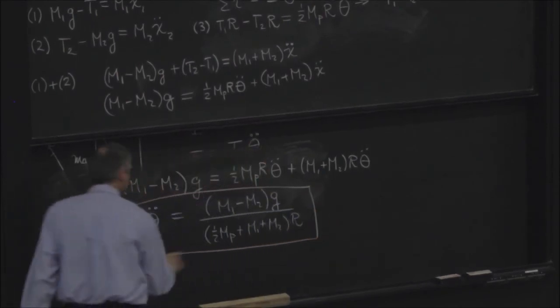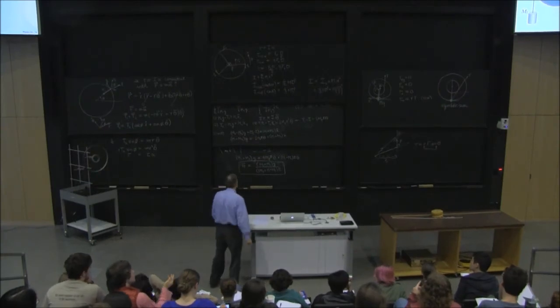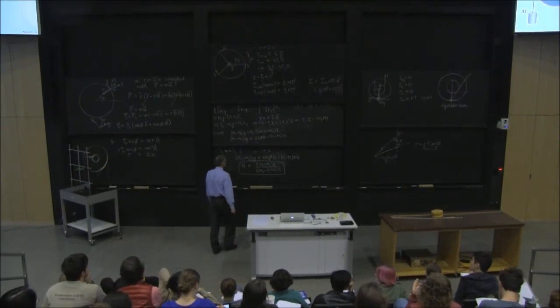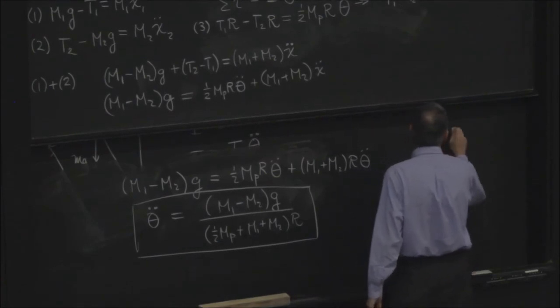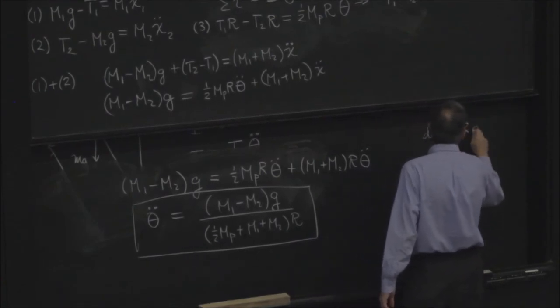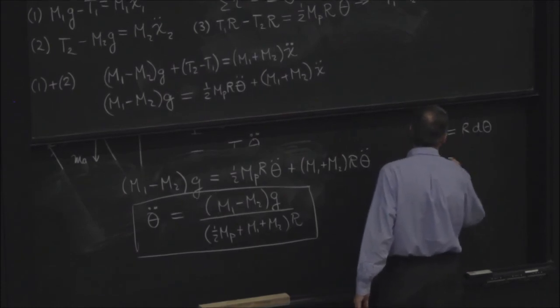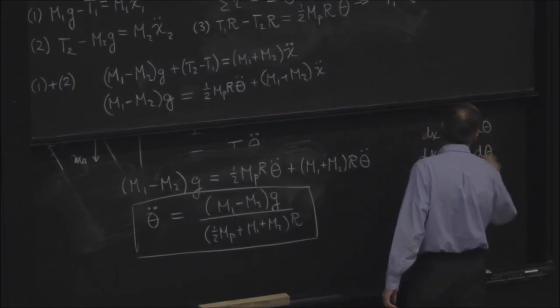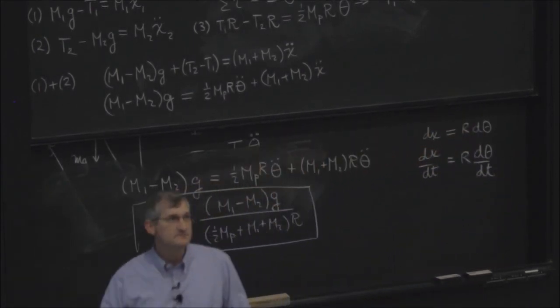I thought that x double dot was r d theta, isn't it theta dot, not theta double dot? Yeah. So dx is equal to r d theta, so dx dt is r d theta dt, and so on.